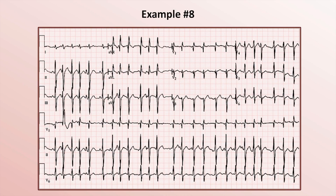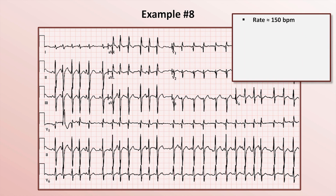Example 8. Using the 10-second rule with 25 QRS complexes across the 10-second strip, the overall rate is about 150. It's clearly irregularly irregular and narrow complex.